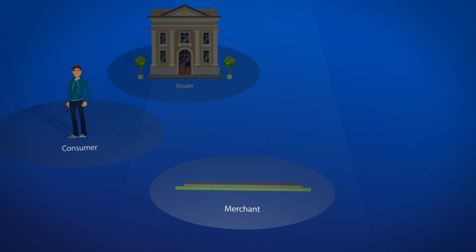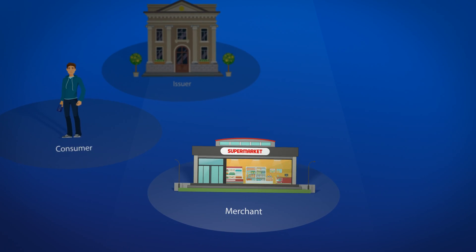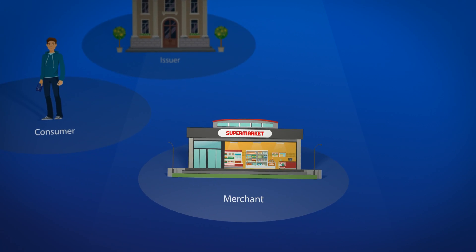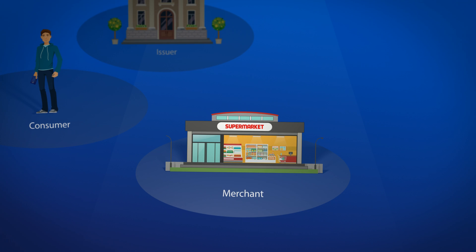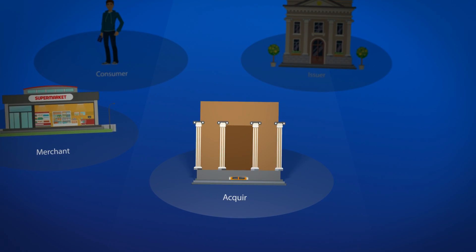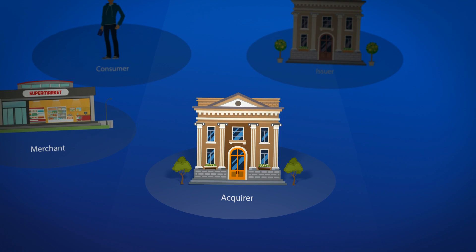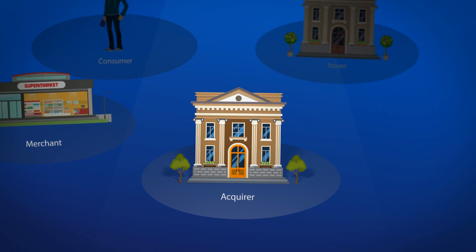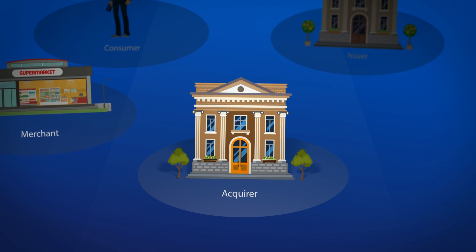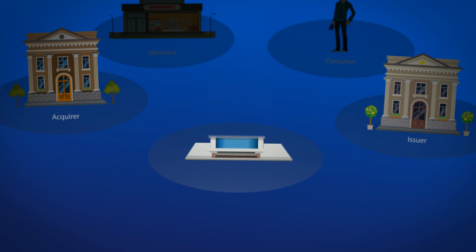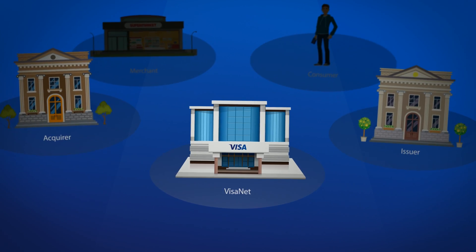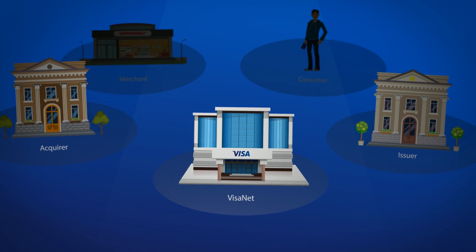Merchants who choose to participate in the payments network can take advantage of the large consumer base along with the fast, safe, and secure transactions provided by the network. The merchant's bank is also known as the acquirer. The acquirer provides access to the network for the merchant by authorizing their transactions and ensuring that the merchant receives payment quickly and securely. And there is the network, or VisaNet, that connects all of the parties involved in order to make electronic payments possible.